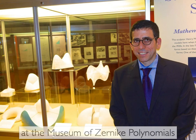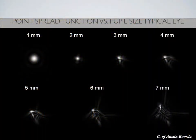We describe the wavefront shape using Zernike polynomials and words associated with those shapes — trefoil, coma, and so on. A point of light coming out of the eye would not resolve to a single point even with a spherical lens because of these aberrations. The spreading of that point is called the point spread function.